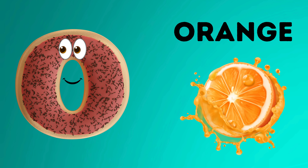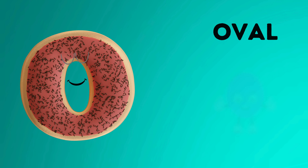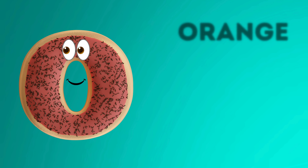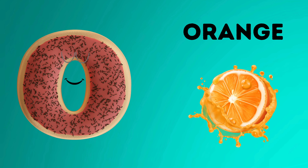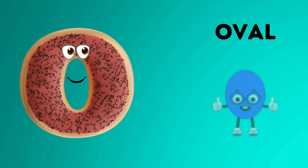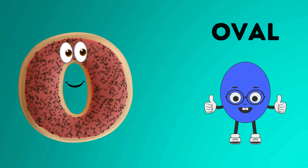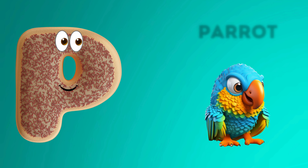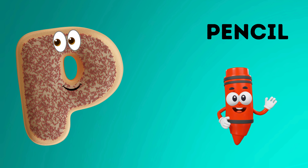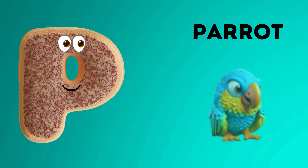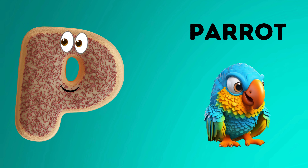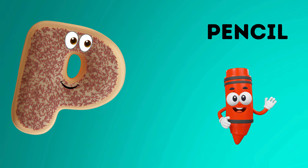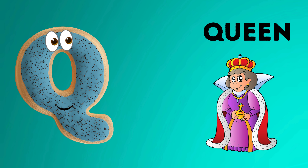O is for orange, o-o-orange. O is for oval, o-o-oval. P is for parrot, pa-pa-parrot. P is for pencil, p-p-pencil. P is for p-p-p-p-parrot. P is for p-p-p-p-pencil.